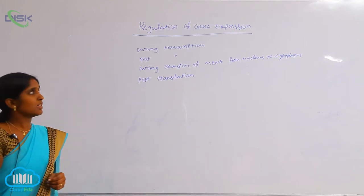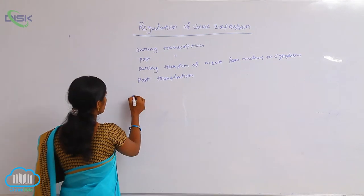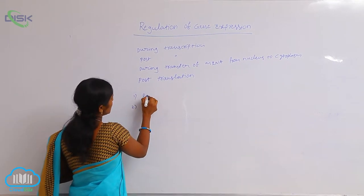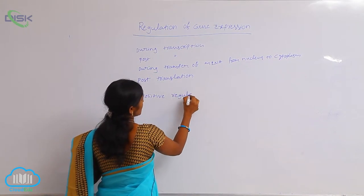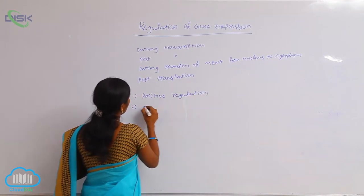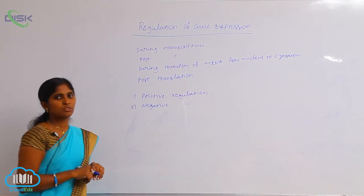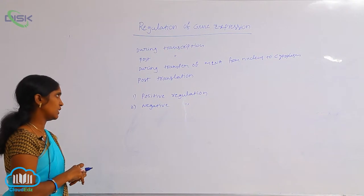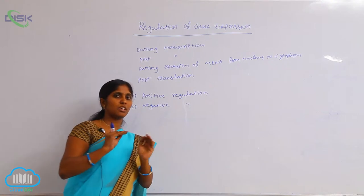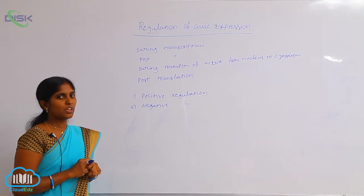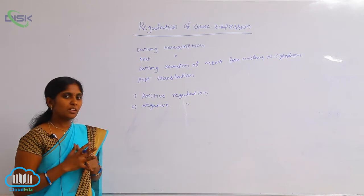During transcription, regulation of gene expression may be of two types: positive regulation and negative regulation. What is positive regulation and what is negative regulation? During transcription means mRNA formation — how the mRNA is regulated in a positive or negative manner.